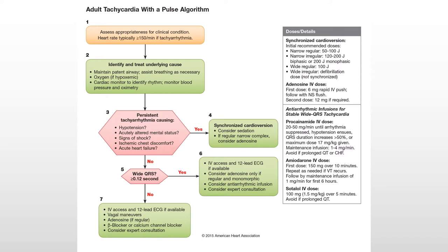This is the American Heart Association's recommendation. In real life it doesn't always happen this way, but for testing purposes it does. For synchronized cardioversion, consider sedation — if you have any feelings at all, you will advocate for your client to have a sedative because it is a painful procedure. If it's a narrow complex SVT, they would consider adenosine. In real life, before sending an electrical pulse through the heart, we'd usually start with adenosine for narrow complex SVT.